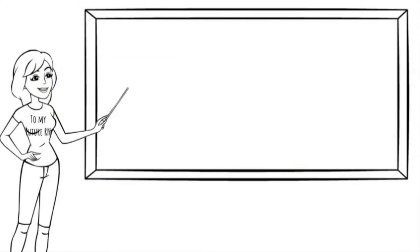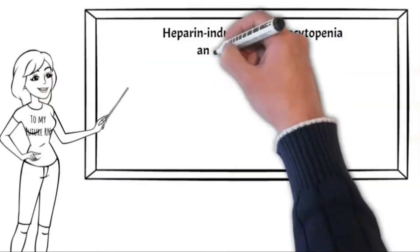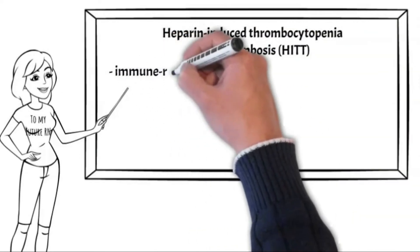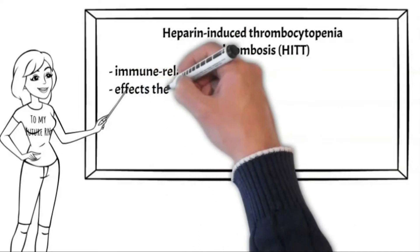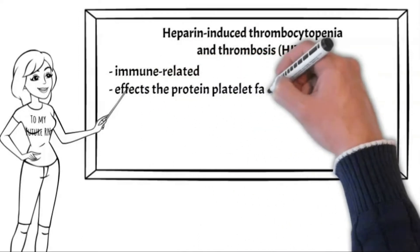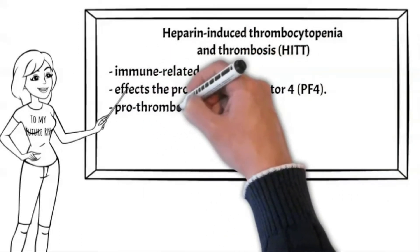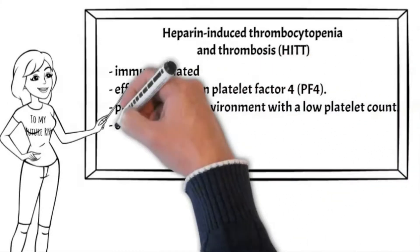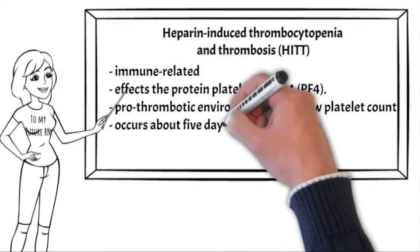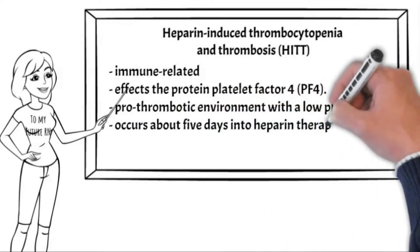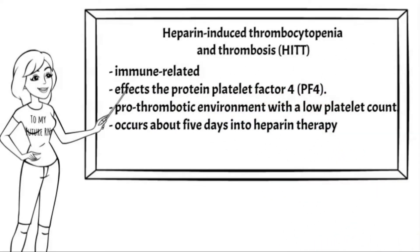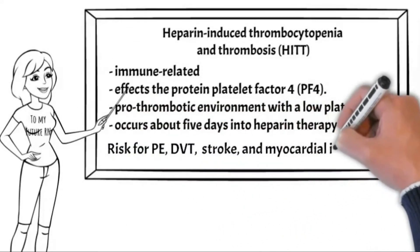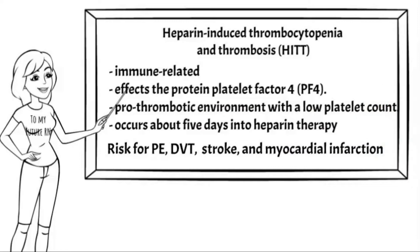The second type of HIT — HIT with two T's — is an immune-mediated thrombocytopenia. It occurs when heparin binds to the protein platelet factor 4. It creates a prothrombotic environment where you have thrombus formation with low platelets. This usually occurs about five days into heparin therapy, and puts your patient at great risk for PE, DVT, stroke, and MI.